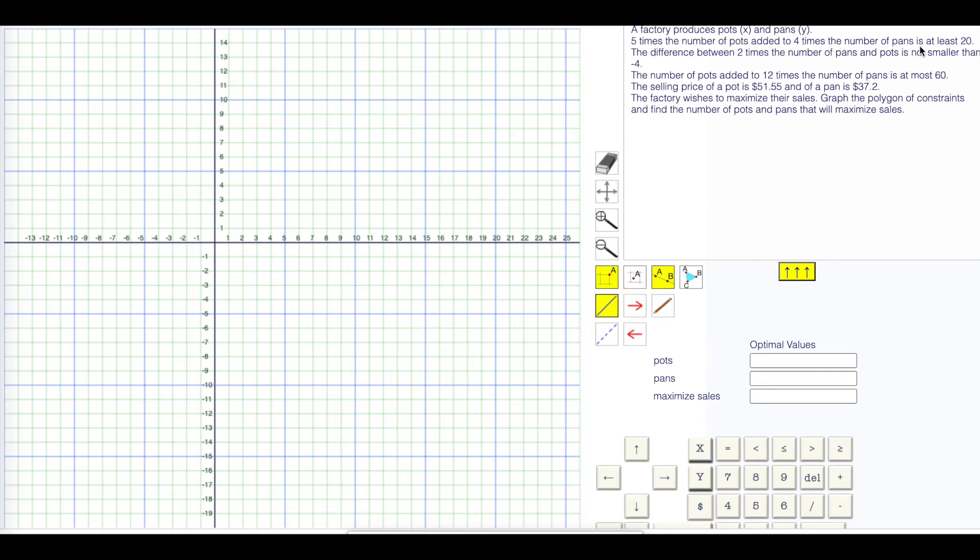Five times the number of pots added to four times the number of pans is at least 20. Pots is x. Five times the number of pots, 5x, added to four times the number of pans, plus 4y, is at least 20. That means greater than or equal to 20.